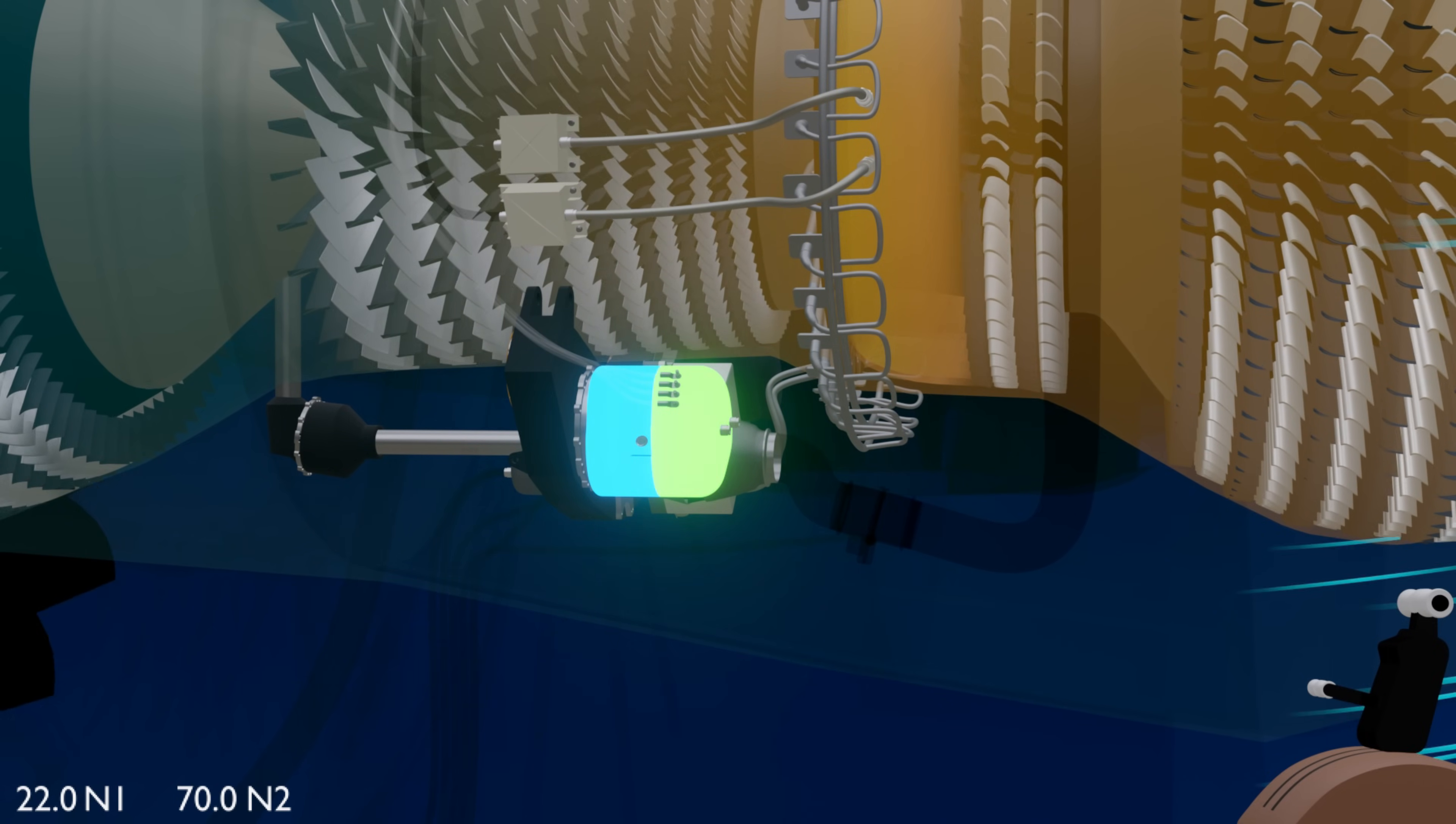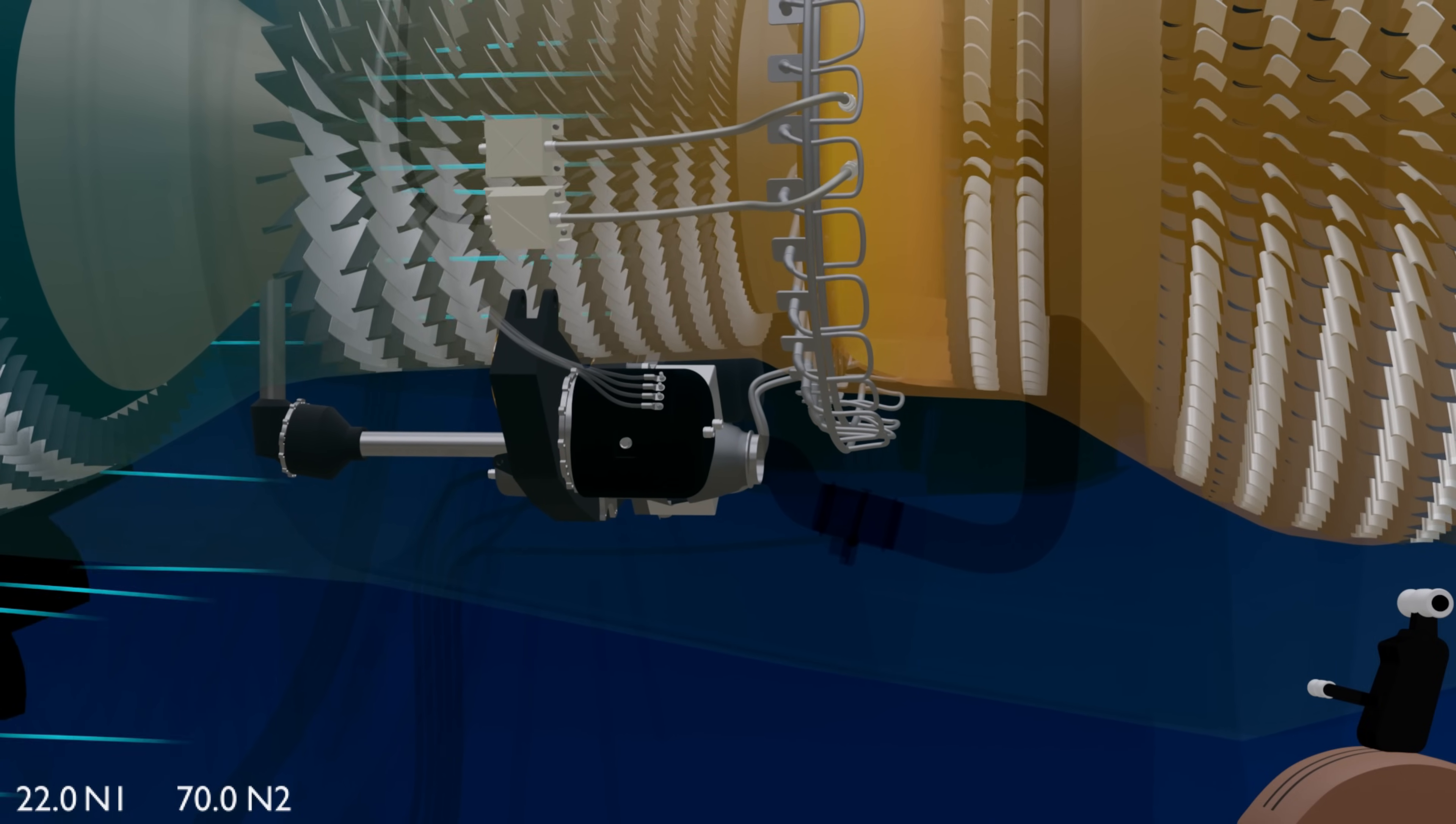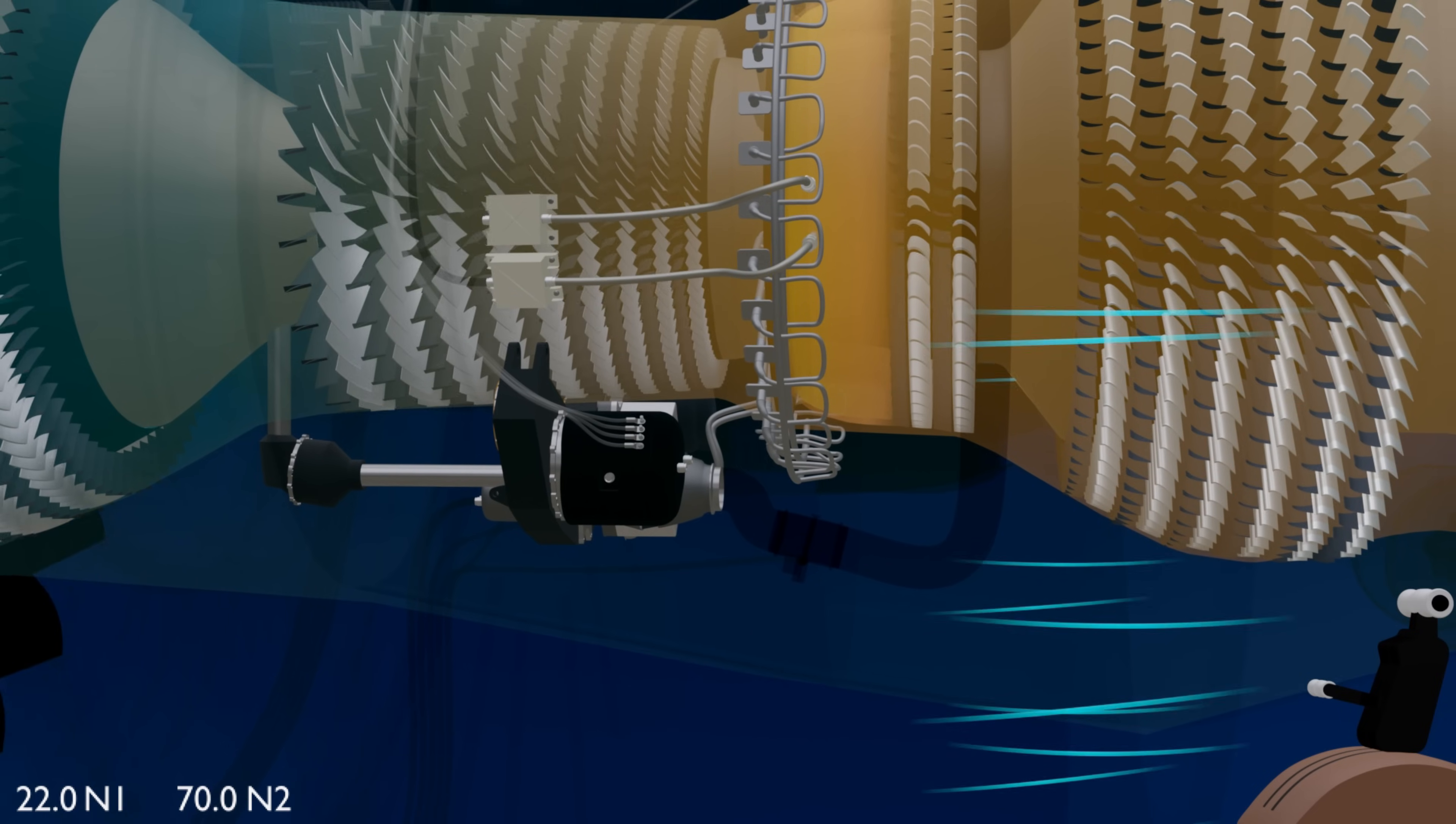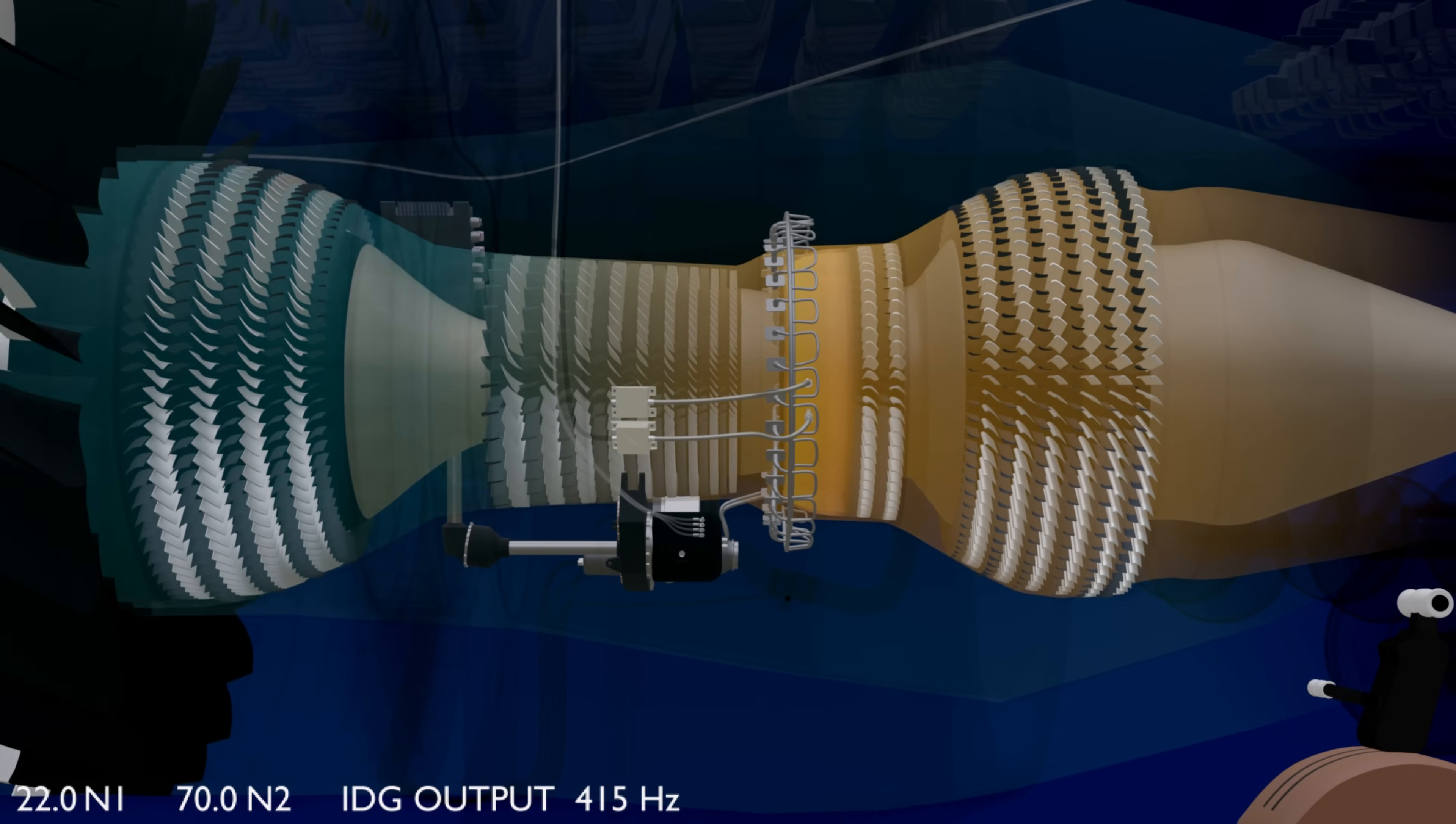The constant speed drive ensures the generator is driven at a constant speed, despite the changing N2 RPM. As a result, the generator gives a steady 415 Hz output, ready to be supplied to the aircraft loads.